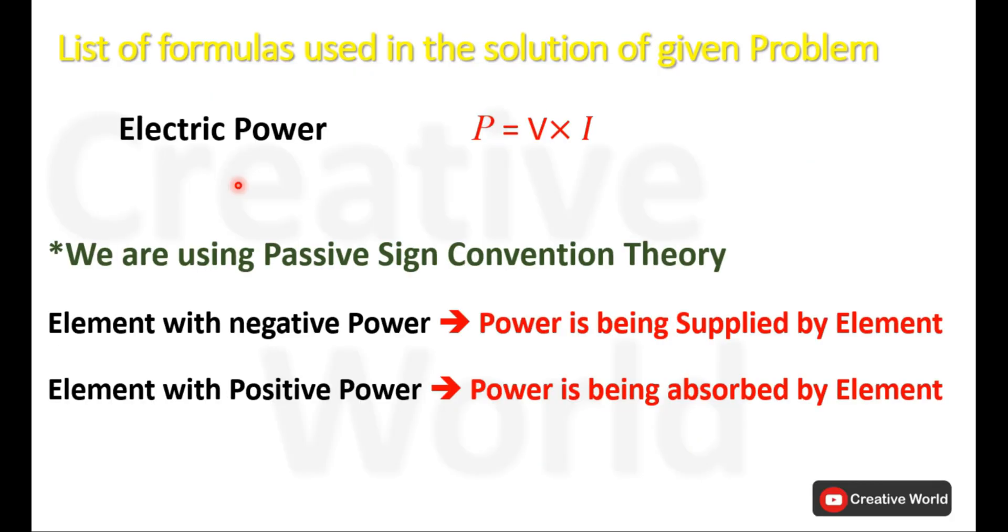In this scenario the electrical power formula will be used and we will be using passive sign convention theory. According to this theory, an element with negative power will be considered as a power supplier and an element with positive power will be considered as a power absorber.